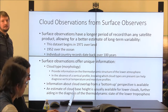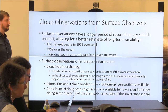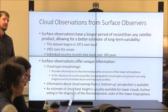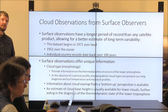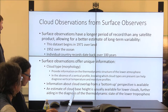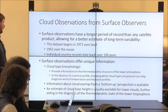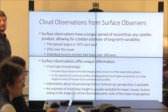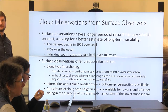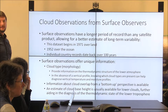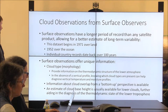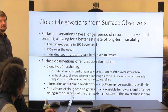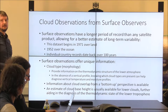Surface observations offer unique cloud information you can't even get from satellites, like cloud type, which gives you some idea of the thermodynamic structure of the atmosphere. If you have persistent stratus, you'll know there's a strong inversion in place. You get an idea of what's going on not just at the surface but up into the mid-troposphere — cumulus, cumulonimbus, instability. Surface obs offer a bottom-up perspective; in satellite ops, high cirrus often obscures the view looking down. We also get an estimate of cloud base height, which gives you a lot of information about humidity and temperature profiles.